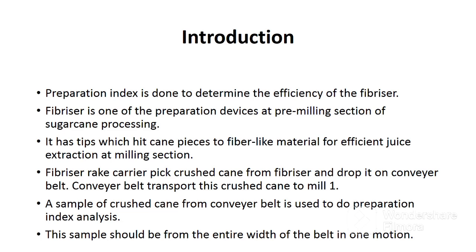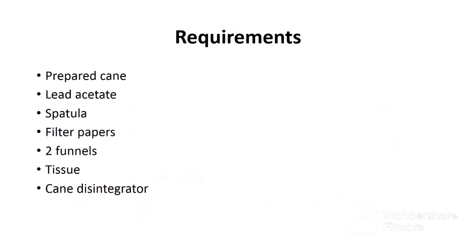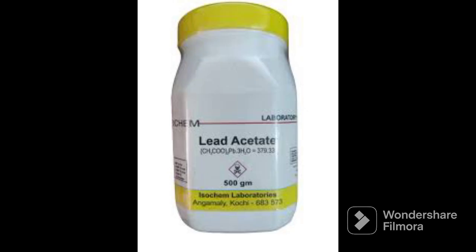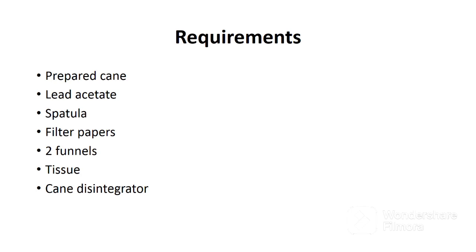The sample should be taken from the entire width of the belt in one motion. The requirements for this analysis are: prepared cane and lead acetate. This chemical is used to clarify the extracted juice from prepared cane.